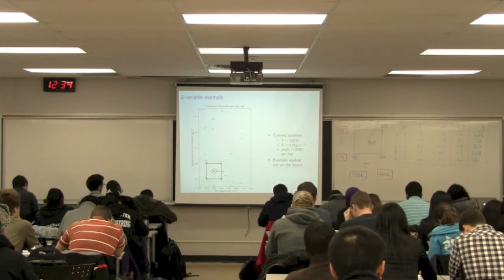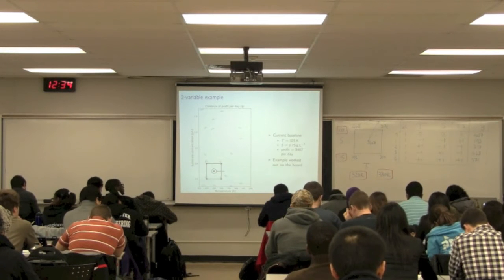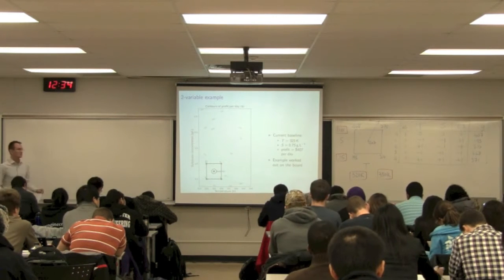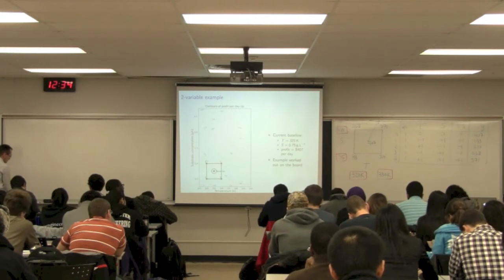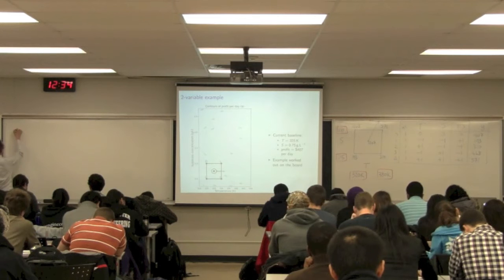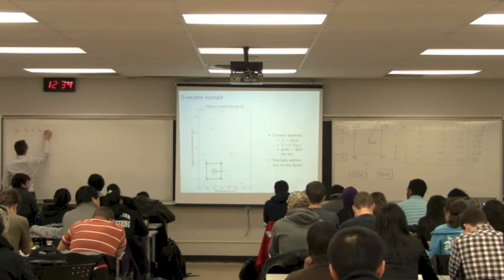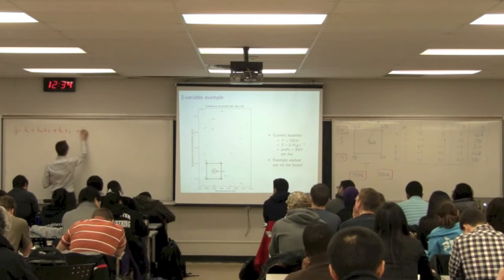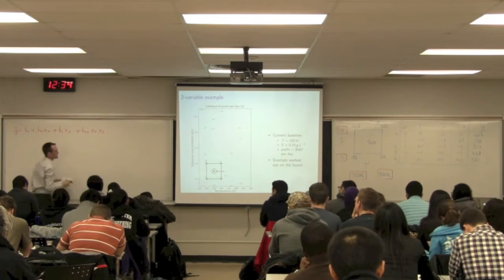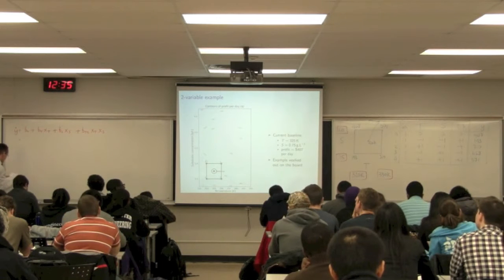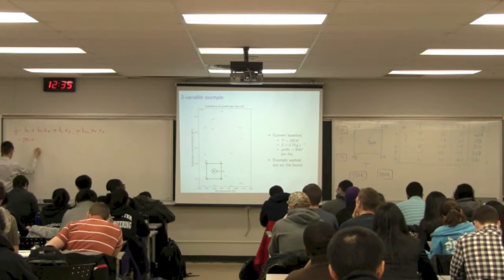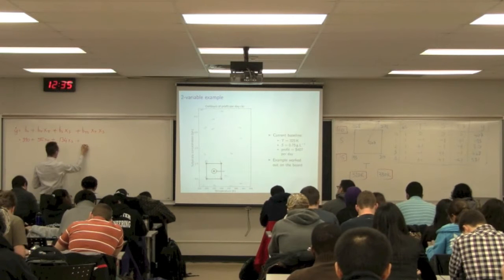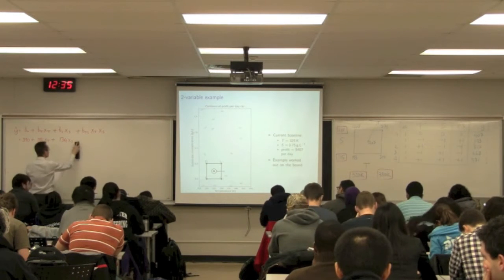That's where we ended the previous class. I asked you to go home and calculate the coefficients in the least squares model that fits those five data points — five data points, four coefficients in the least squares model. You should be able to calculate that Y-hat, the predicted Y, is equal to b0 plus the temperature effect bT times xT in coded units, plus the substrate slope coefficient bS multiplied by xS, plus the two-factor interaction bTS times xT multiplied by xS. You should get that b0 is 390, bT is 55, bS is 134, and the two-factor interaction is a small negative value of minus 3.5.